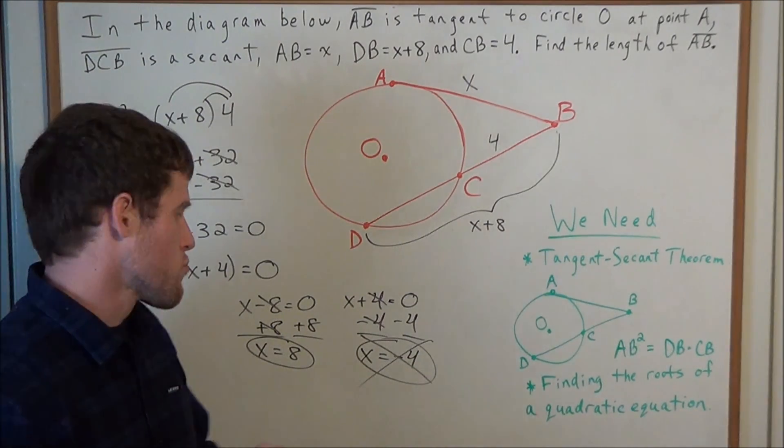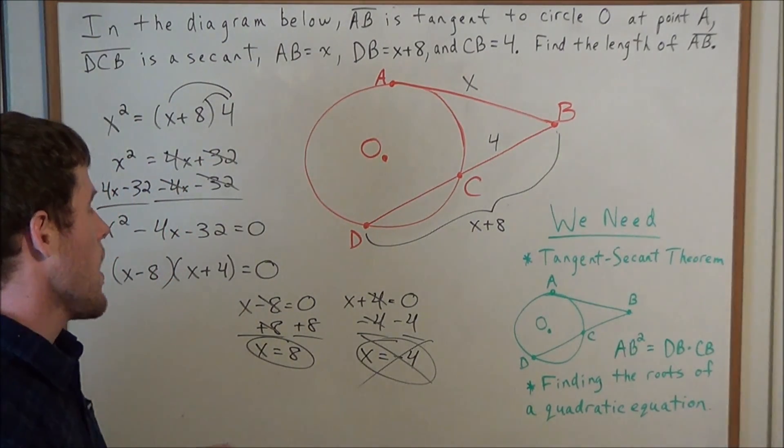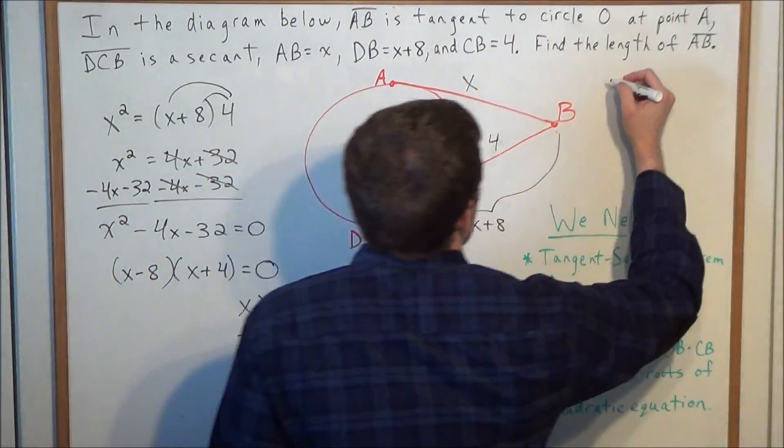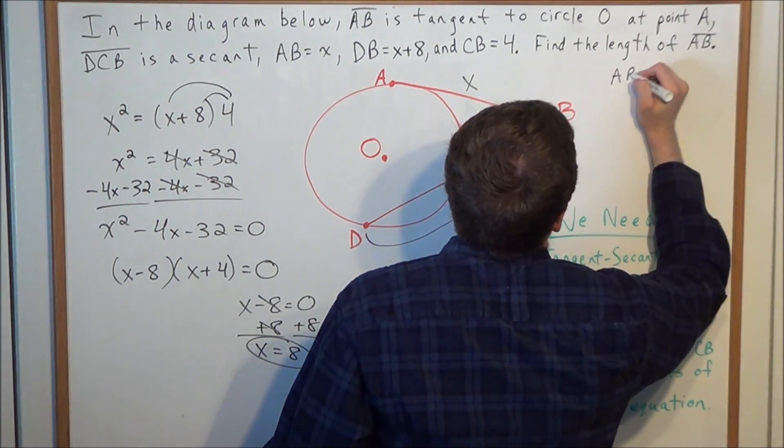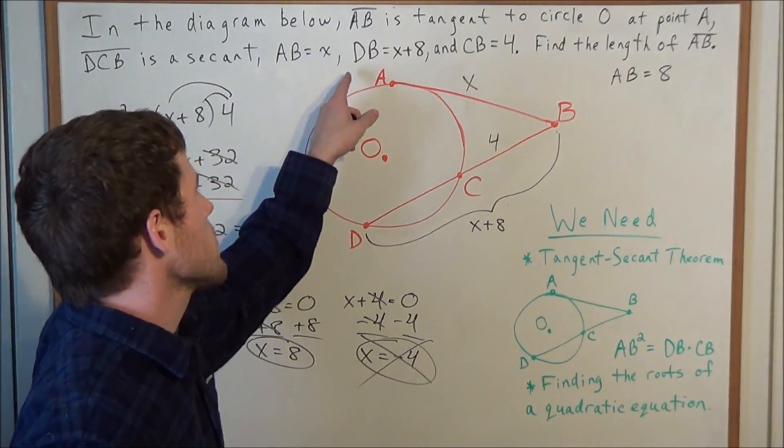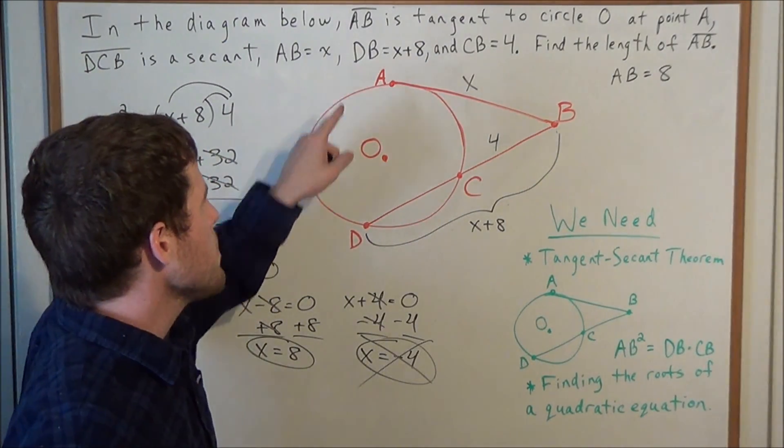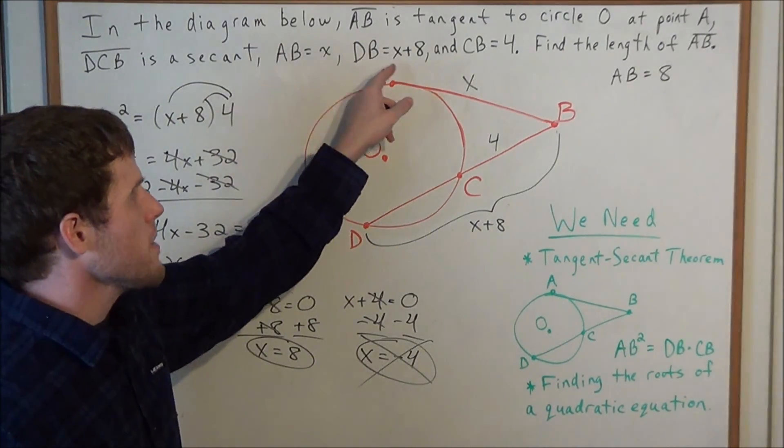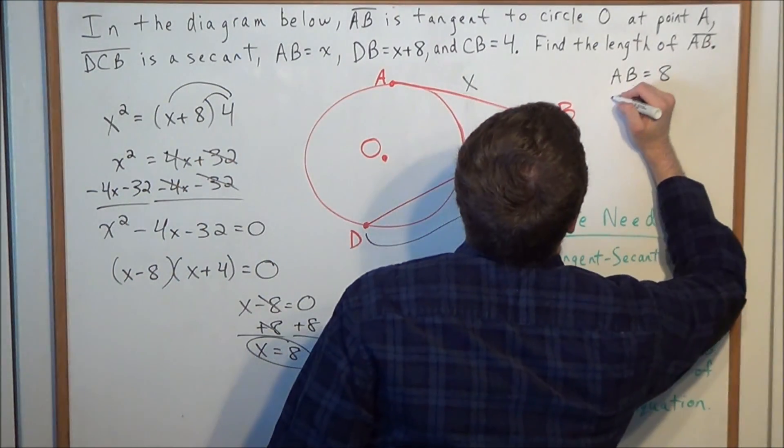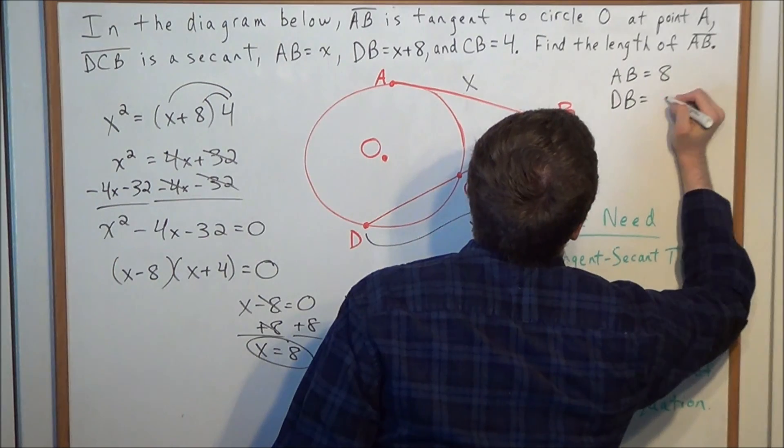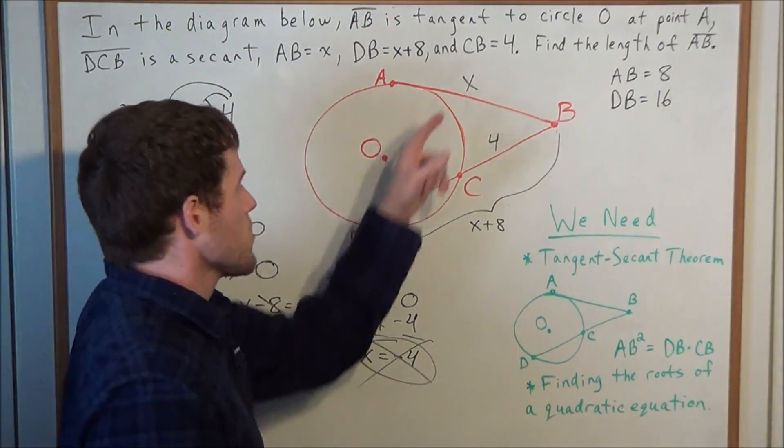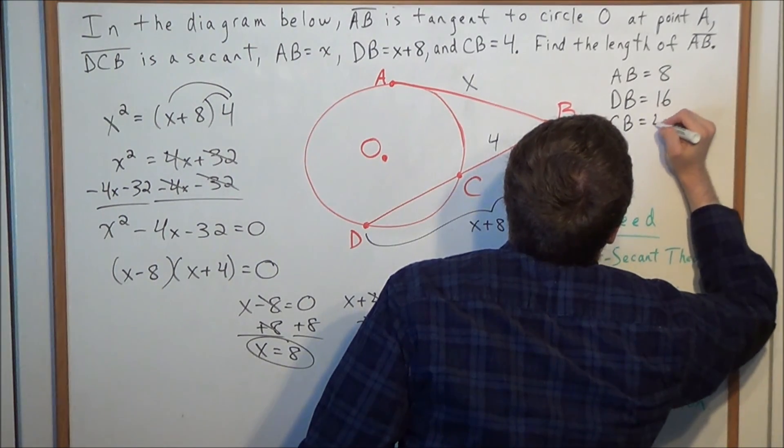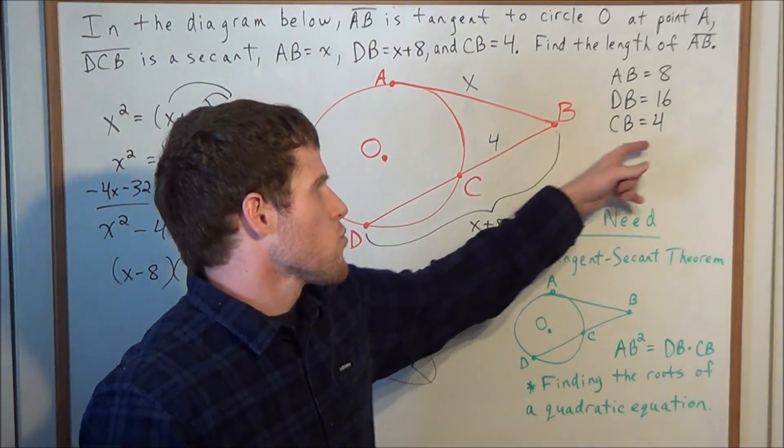We reject this root, and we accept the positive root. And now the extra set in this problem, we have the length of line segment AB is equal to 8. And now the length of secant DB is equal to X plus 8. So we could just plug in X, and we have 8 plus 8 is 16. So this tells us DB is equal to 16. And finally, well, CB is already in simplified form, or it's already in a real number form.